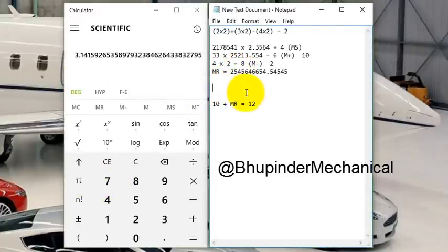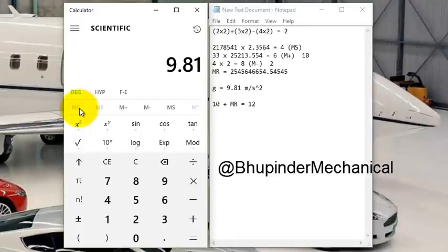G equals 9.81 meters per second squared. You can put that into the memory. In order to do that, clear the memory from whatever it was, put that new number 9.81, then store it with memory store. And then let's say we got 50 kilograms times that, recall the memory, equals 4905 newtons.